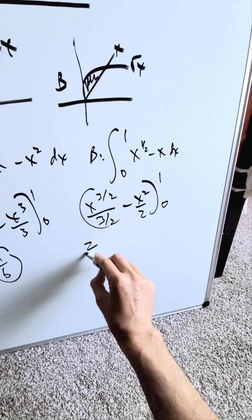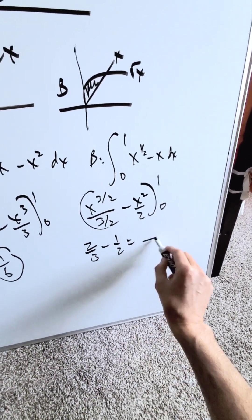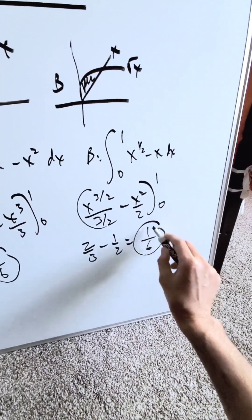Bring this to completion. I have 2/3 minus 1/2. What do you have? You have common denominator 6, 4 minus 3 which is 1/6.